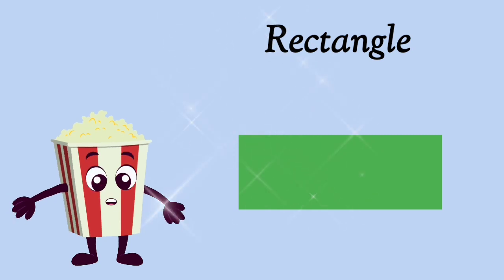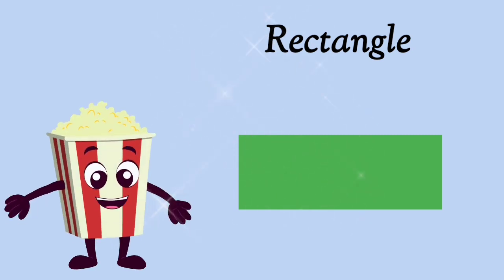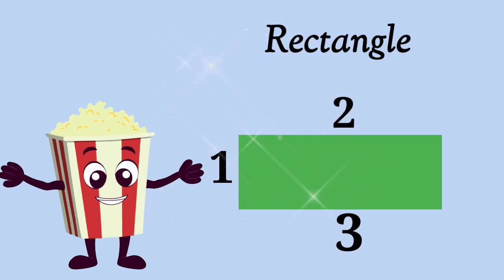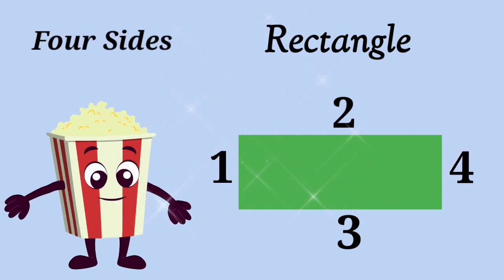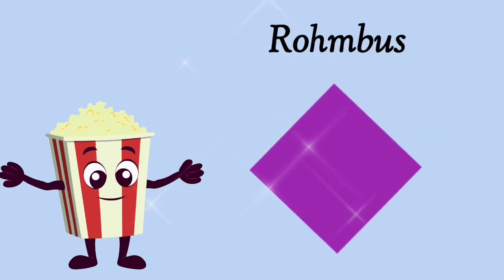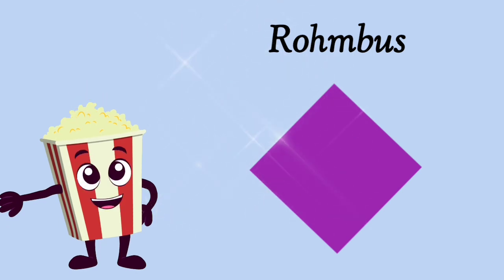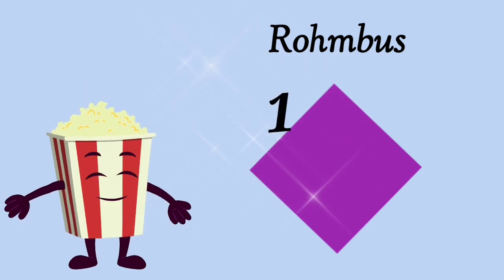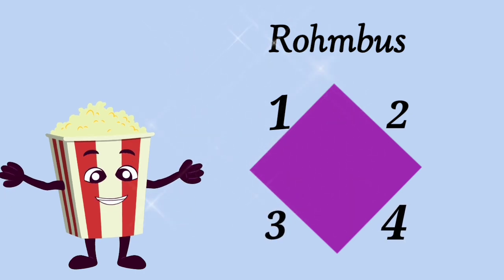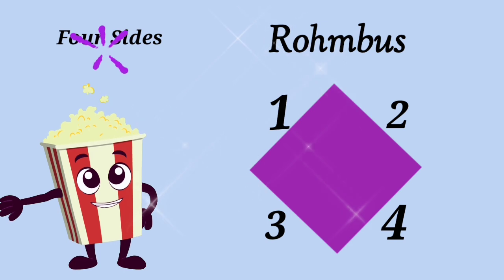How many sides does a rectangle have? Let's count. 1, 2, 3, 4. A rectangle has 4 sides. Now, let's count the sides of a rectangle. 1, 2, 3, 4. A rectangle has 4 sides.